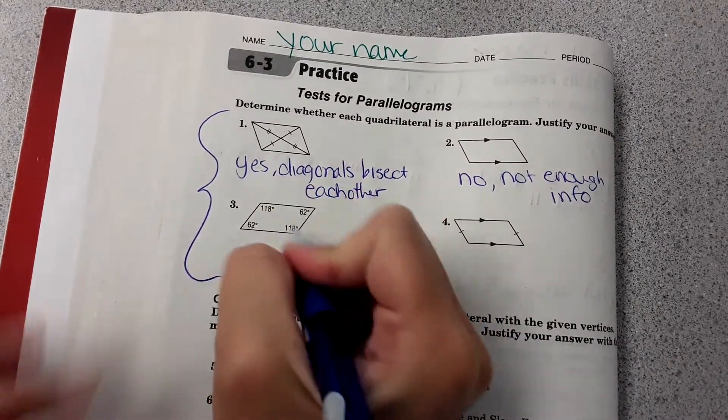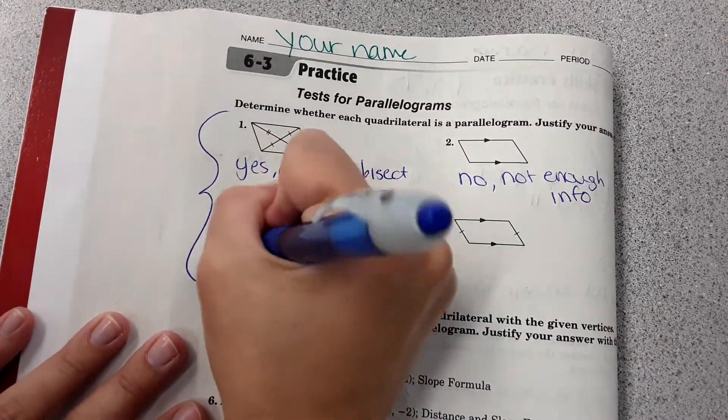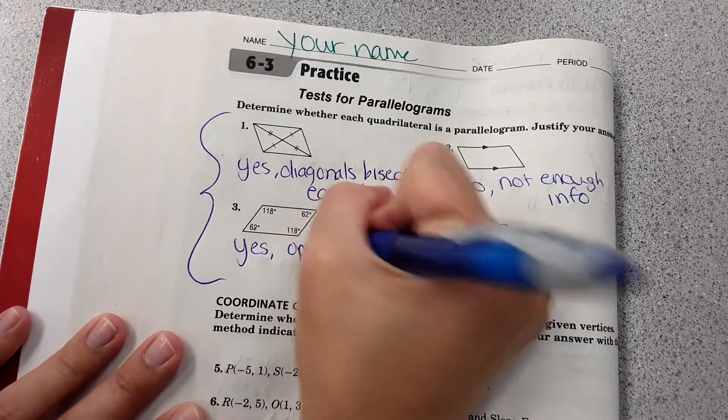Then, opposite angles are congruent here, so yes, it is opposite angles congruent.